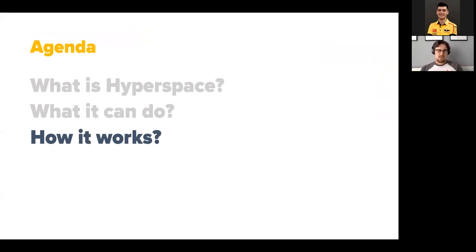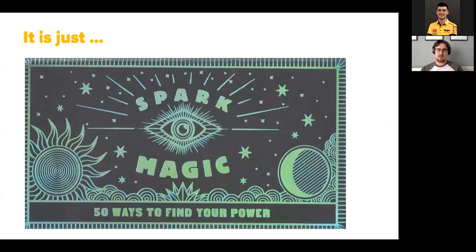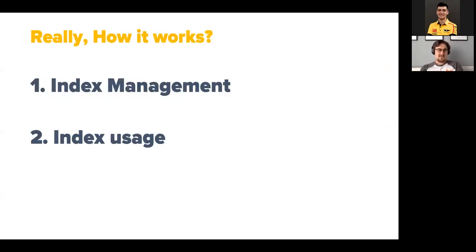Let's think about how it works. Quite commonly when I'm conducting interviews about Spark and asking how Spark works, I get something like 'Spark magic.' That's basically the level at which you know Spark, but today we'll go a bit farther. To explain how it works, we have two parts: first is index management - how files are created, what the structure is - and then how we can use these indexes in our queries.